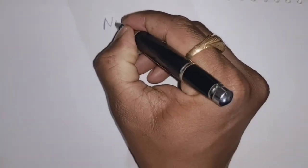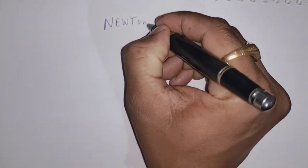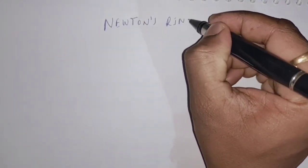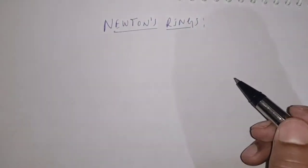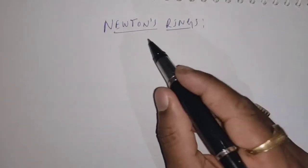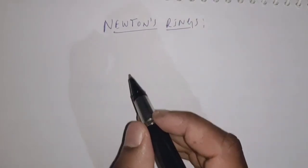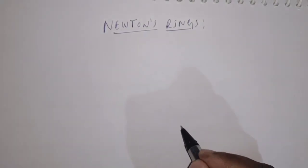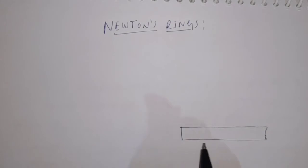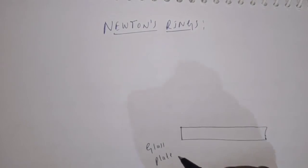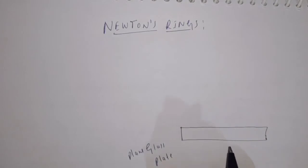In this video, I am going to discuss about Newton's rings. First, let us discuss about the experimental setup of Newton's rings. The experimental setup consists of a plain glass plate, and above the plain glass plate, a plano-convex lens is placed.